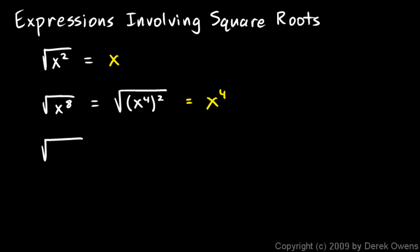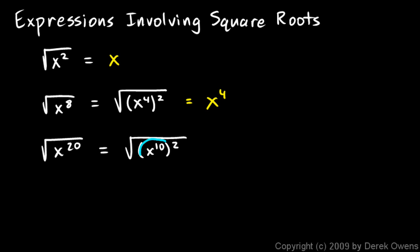Let's do another, and you'll see a pattern here. The square root of x to the power of 20. Again, rewrite this as something squared. x to the 20 is the same thing as x to the 10 squared, because the rules of exponents say one exponent raised to another is the same as those two exponents multiplied together. So x to the 10 squared is x to the 10 times 2, or x to the 20. Written as something squared, the square root of this squared is just this. So the answer is x to the 10th.